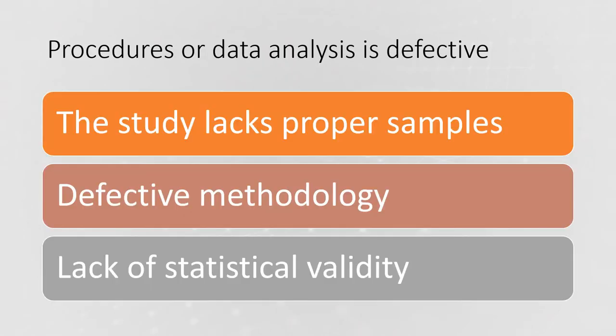A paper may also be rejected because of a deficiency or lack of authenticity in data analysis. Sometimes the data analysis is defective. The reasons include: the study lacks proper sampling techniques, the study follows a defective methodology, and the research failed to test validity — there is a lack of statistical validity of the data set.